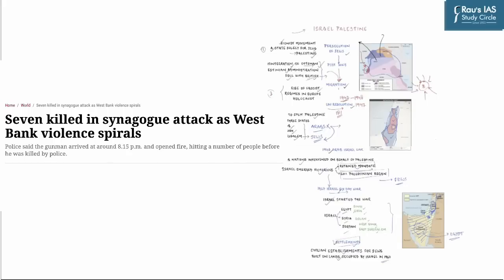The first news we have taken appeared in the Indian Express Explained section last week: 'Seven killed in synagogue attack as West Bank violence spirals.' A Palestinian gunman killed seven people and wounded three others in a synagogue on the outskirts of Jerusalem, an attack that heightened fears of a spiral in bloodshed a day after the deadliest Israeli raid in the West Bank in years. This is one of many instances when we read about the Israel-Palestinian conflict.